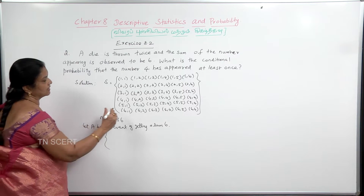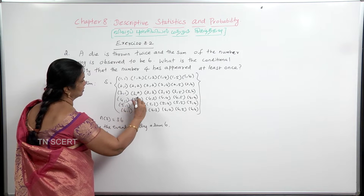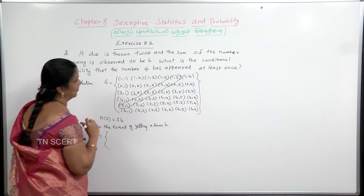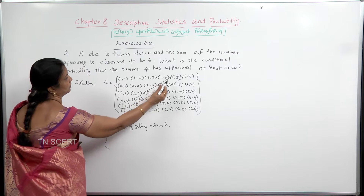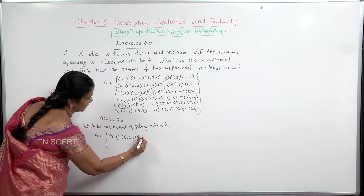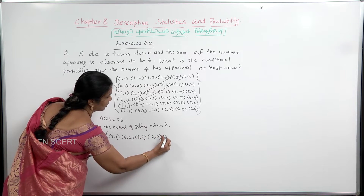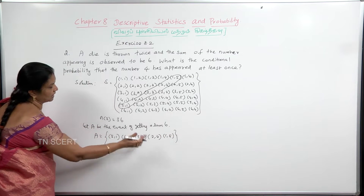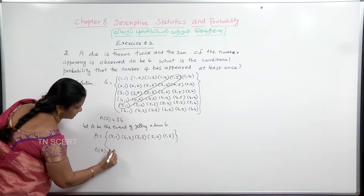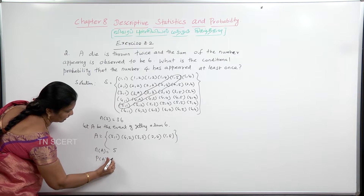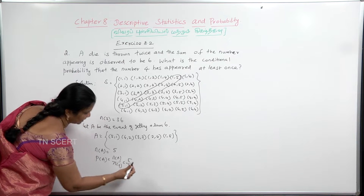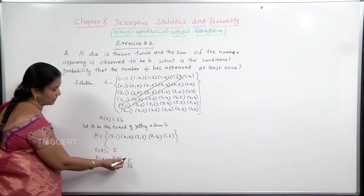A is equal to the event that the sum is 6. The pairs are: (5,1), (4,2), (3,3), (2,4), (1,5). This is the set of 2 numbers that add to 6. So n of A is equal to 5 elements. Then P of A is equal to n of A by n of S, which is 5 by 36.